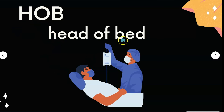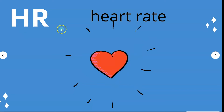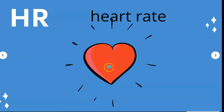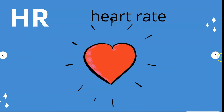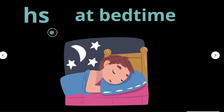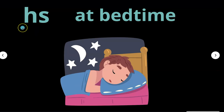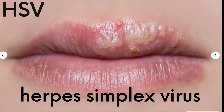HOB stands for head of bed. HR stands for heart rate — how fast the heart is beating per minute. HS stands for at bedtime; you can remember it as 'take at hour of sleep.'